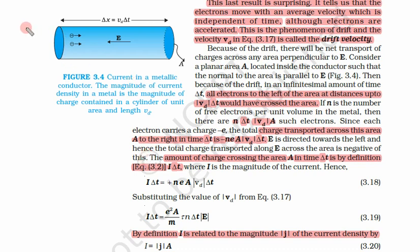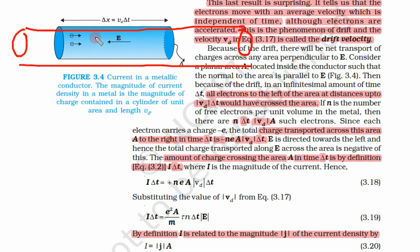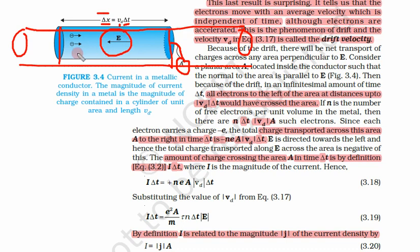We are looking at a picture of a very long conductor. We take a very small portion of it, delta x, which has length delta x. The drift velocity of the electrons is Vd, and it takes time delta t to cross this small length delta x. The area of this conductor is A, and an external field E is applied, causing electrons to start moving opposite to the electric field.